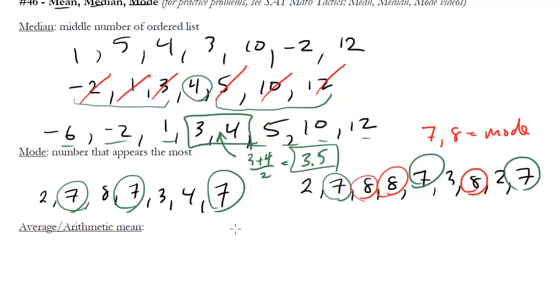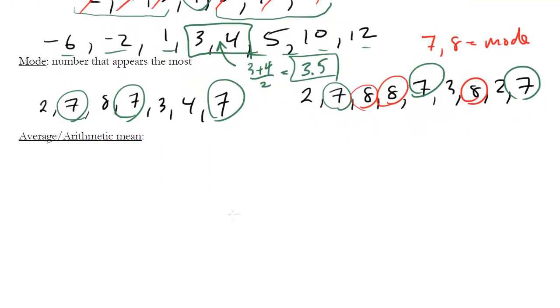And finally, the more complex one of the three statistical topics is the mean, or the average, also known as the arithmetic mean. And the best definition for it is just to look at the formula. The mean of a series, a group of numbers, or the average, is just the sum of the values—so you add up all the numbers—divided by the number of values that you have.